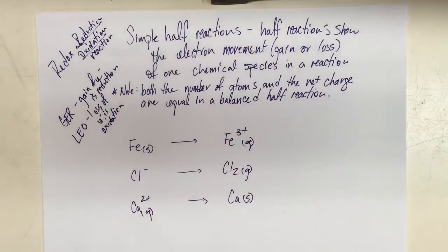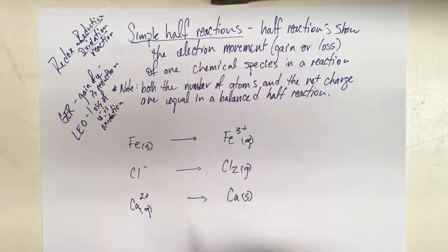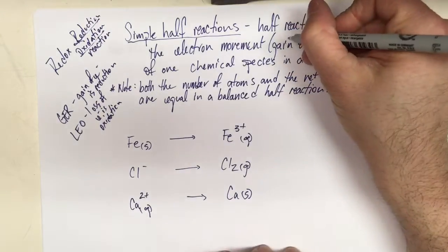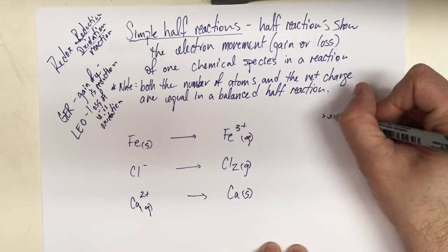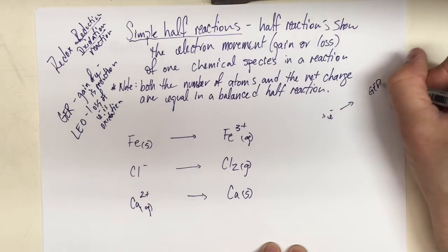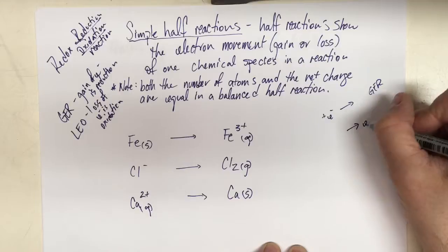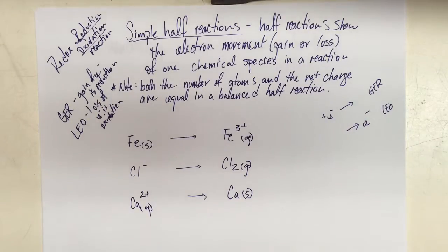A half reaction shows the electron movement — the gain or loss. Gain is where the electrons are a reactant: if you have something plus electrons becoming something else, that's GER. If it is giving off electrons, then it's LEO, meaning the electrons are a product. The half reaction shows the electron movement of one chemical species in a reaction.